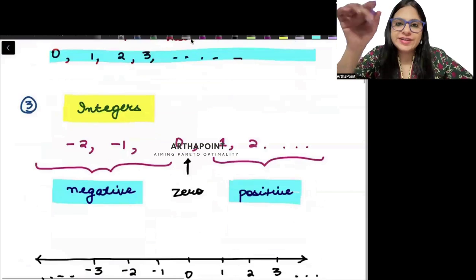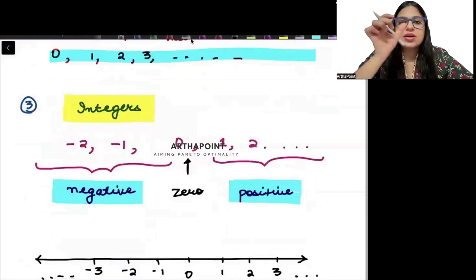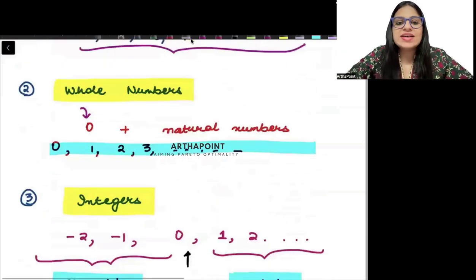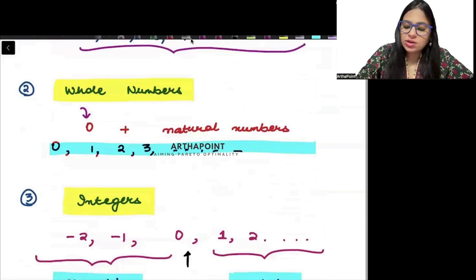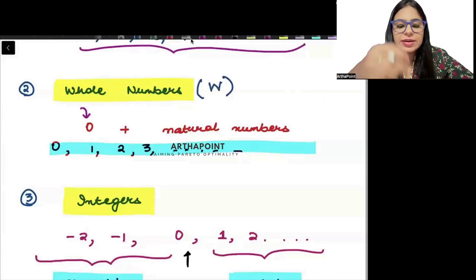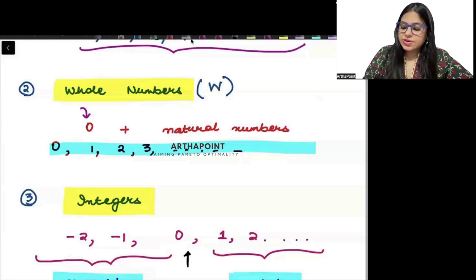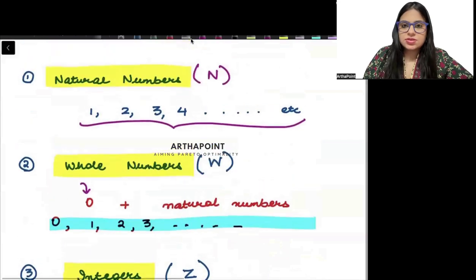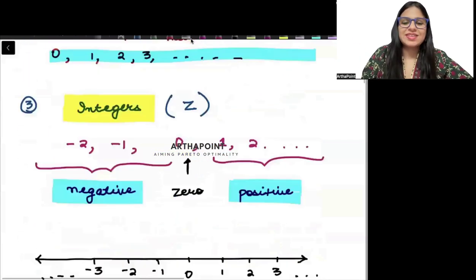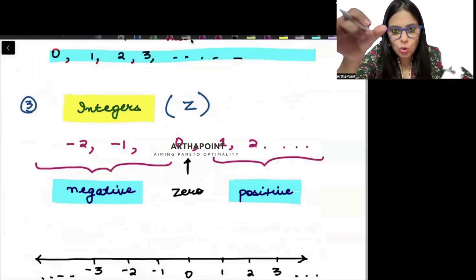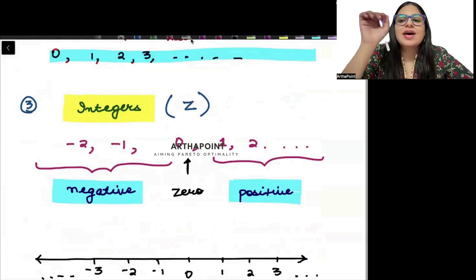Then we have integers. Negative numbers, 0, and positive numbers together are called integers. Whole numbers are represented by W. Integers are represented by Z. Integers are negative numbers, 0, and positive numbers together — they become integers.